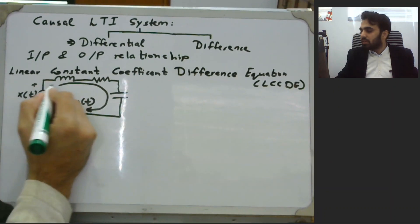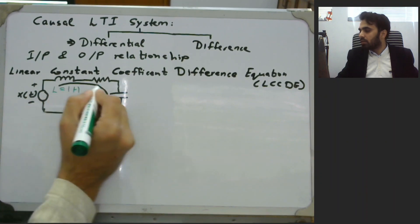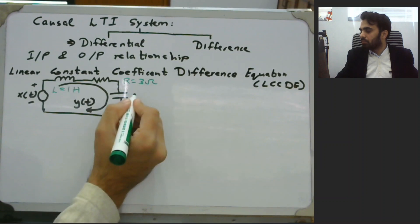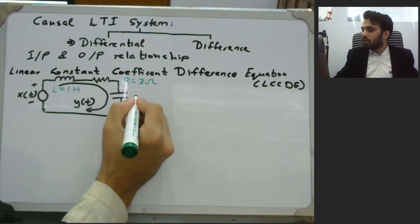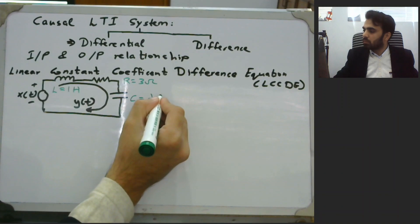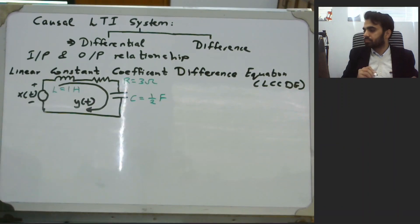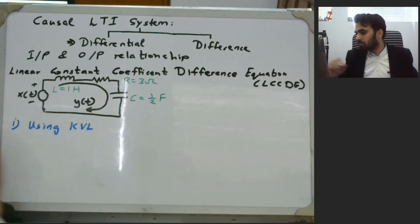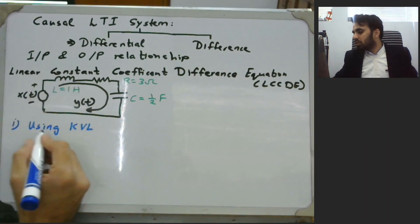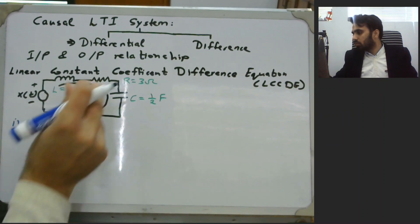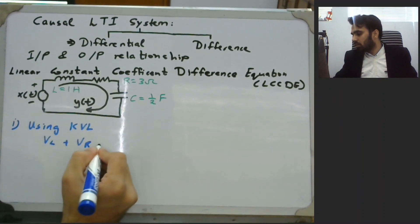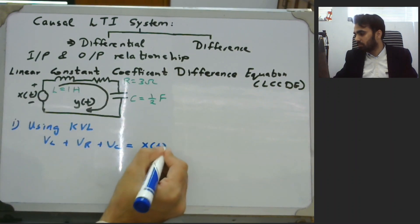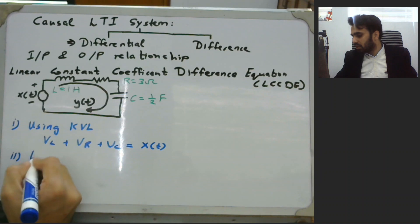Let the inductor L be 1 henry, the resistor be 3 ohms, and the capacitor be 1/2 farad. Using KVL, the voltage across the inductor VL plus the voltage across the resistor VR plus the capacitor voltage should be equivalent to the input voltage x(t).